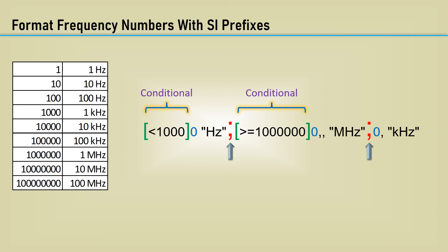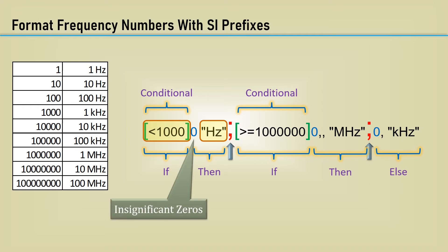The first section is for numbers that are less than 1,000 to be formatted as hertz. The zero is the number of insignificant digits, and without a decimal implies no decimal places. There is a space between the zero and the text HZ.